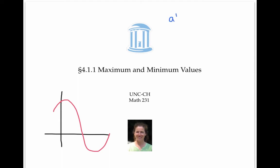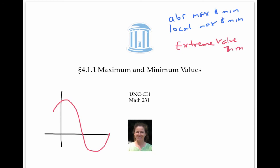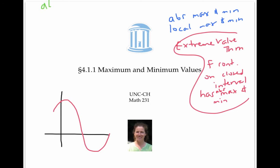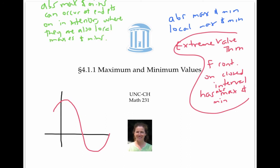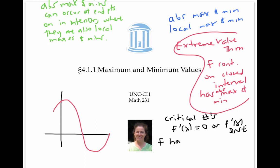In this video, we defined absolute max and min points and values, as well as local max and min points and values. We talked about the extreme value theorem, which guarantees an absolute max and min as long as we have a continuous function on a closed interval. We talked about the fact that absolute max and min can occur at endpoints of intervals or in the interior of an interval, where there are also local max and min. Finally, we talked about critical numbers, where the derivative is either zero or doesn't exist. We noted that if f has a local max or min at c, this guarantees that c is a critical number, but not vice versa, as the example y equals x cubed showed.